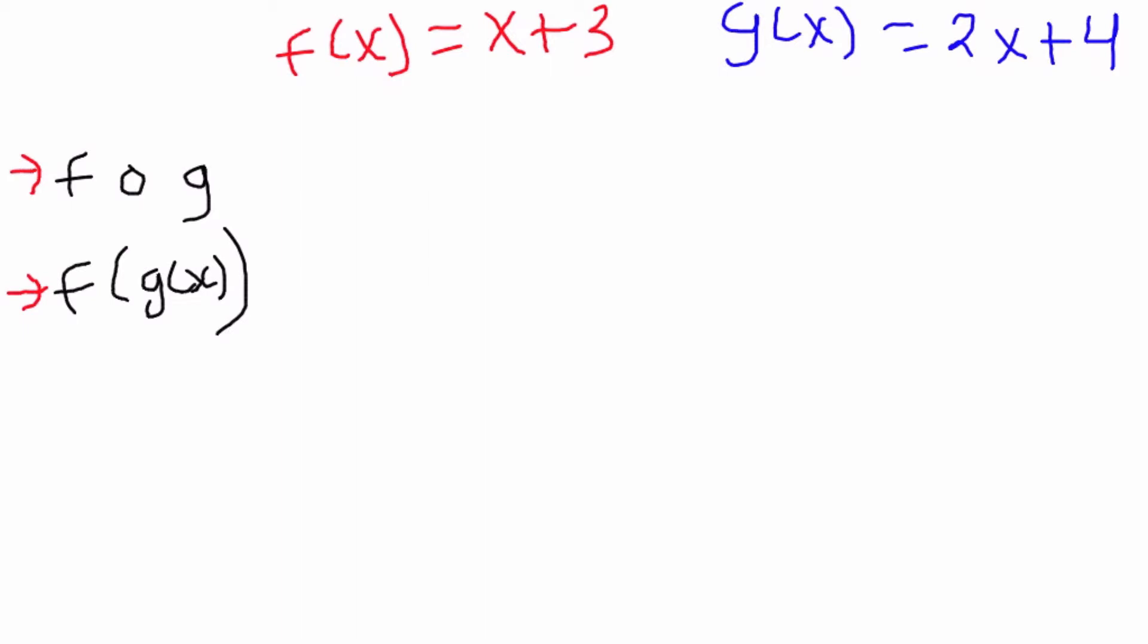Basically they mean we have two different functions, we have an f function and we have a g function. So a composite function is basically the last function that's written, which in this case is g, is going to go inside of the first function. Or as we see down here, the g of x which is the g function is going to be inside the f function.